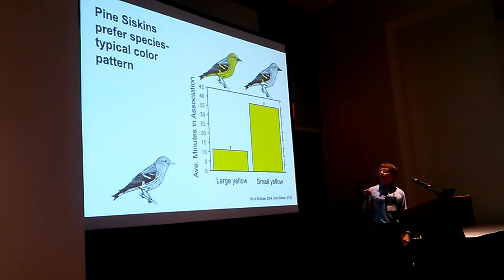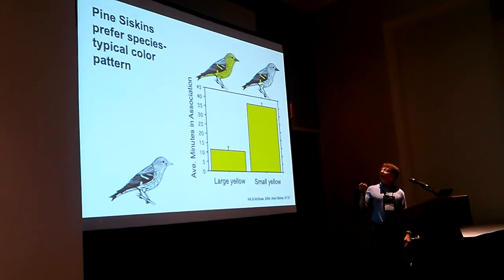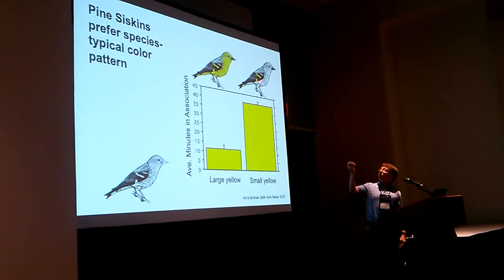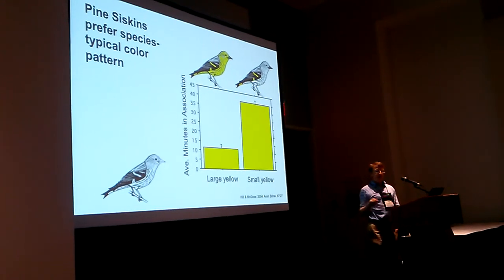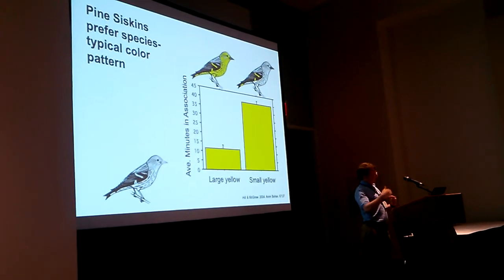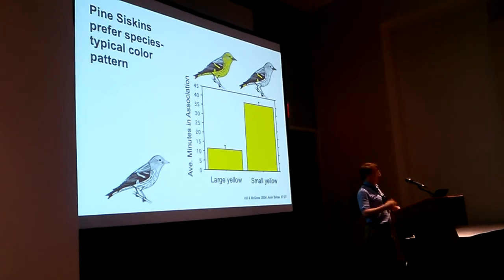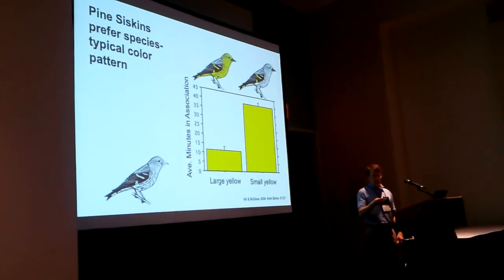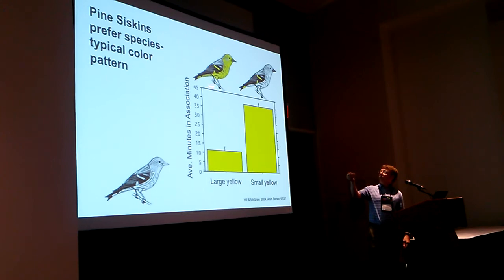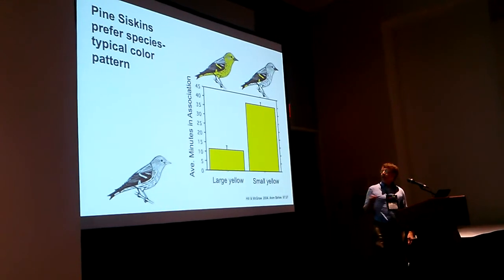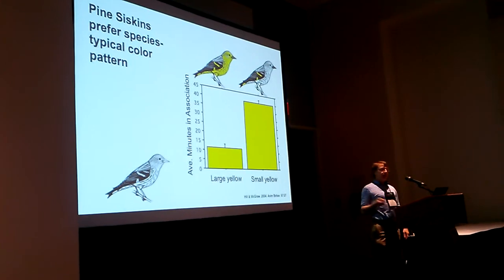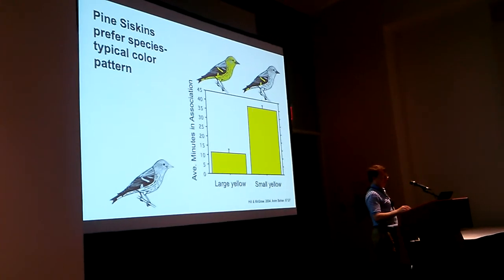We ran a similar experiment with pine siskins. Pine siskins have very modest ornamentation - patches of yellow in the wing and tail. Experiments show that within their populations they prefer slightly bigger and yellower, more intensely pigmented patches. But when we created super males with yellow extended across the whole body surface, females wanted nothing to do with them. Females showed a strong preference for species-typical plumage pattern.